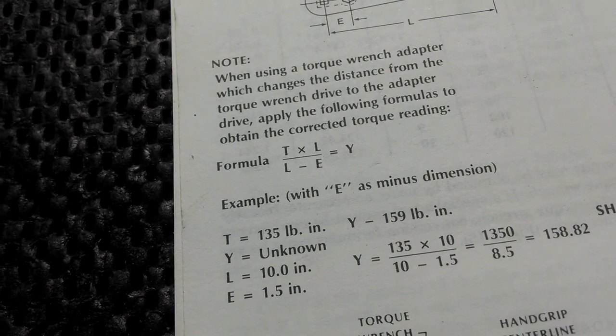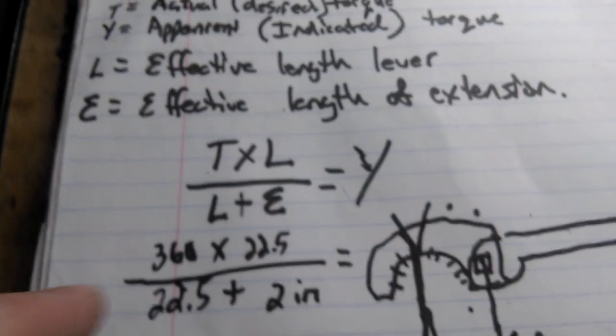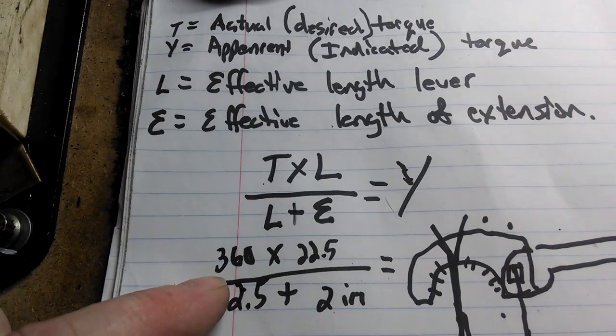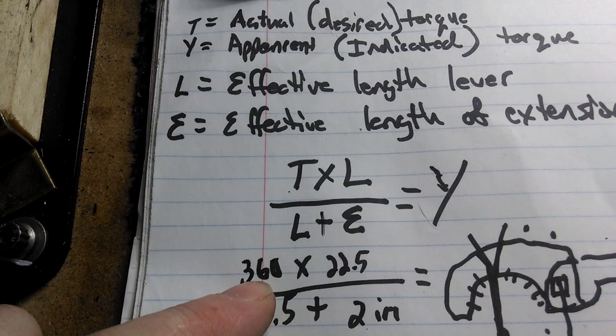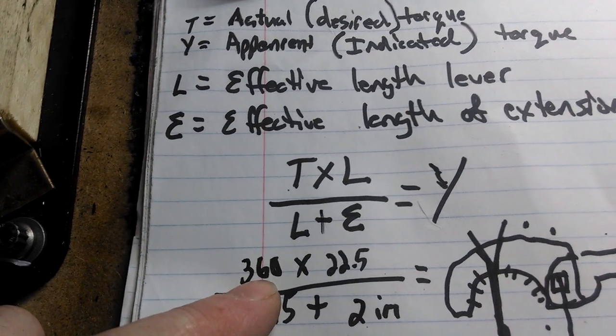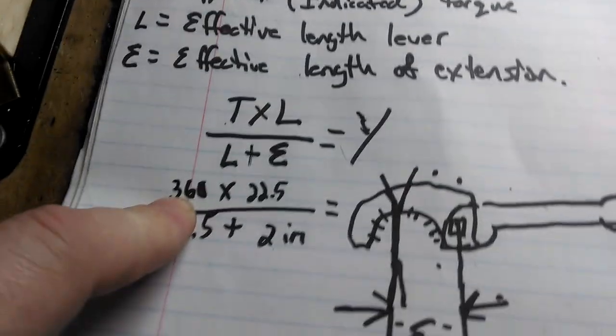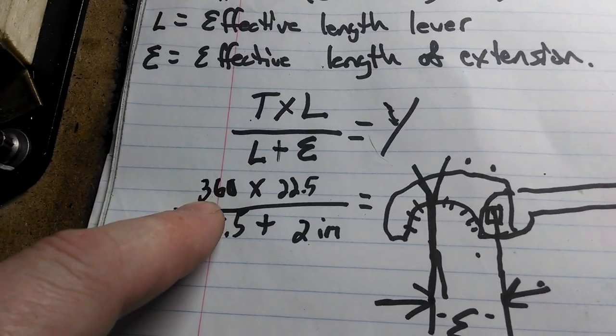I converted it to inch-pounds because this formula over here was in inch-pounds, so I didn't want to stray from what's known. I'm sure it would be the same, but anyway, it's early and I didn't want to screw this up because I don't want to make a retraction video. So 30 foot-pounds is 360 inch-pounds because 3 times 12 is 36.